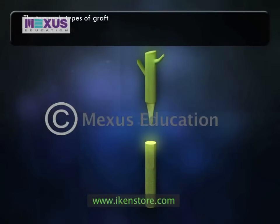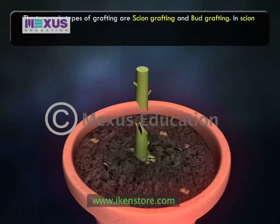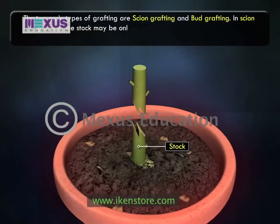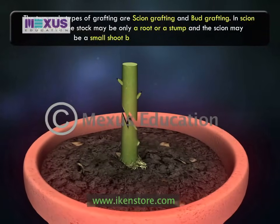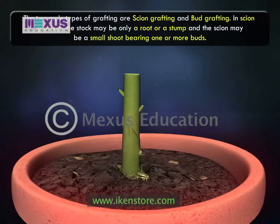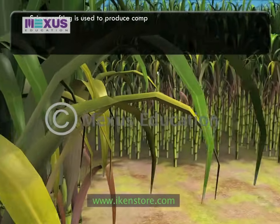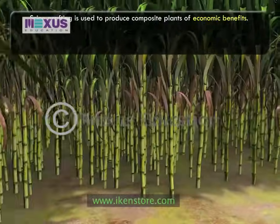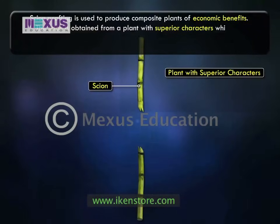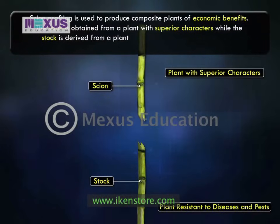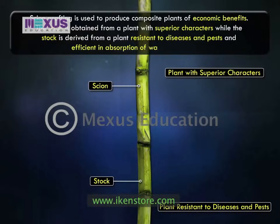The two main types of grafting are scion grafting and bud grafting. In scion grafting, the stock may be only a root or a stump and the scion may be a small shoot bearing one or more buds. Scion grafting is used to produce composite plants of economic benefit. The scion is obtained from a plant with superior characters while the stock is derived from a plant resistant to diseases and pests and efficient in absorption of water and minerals.